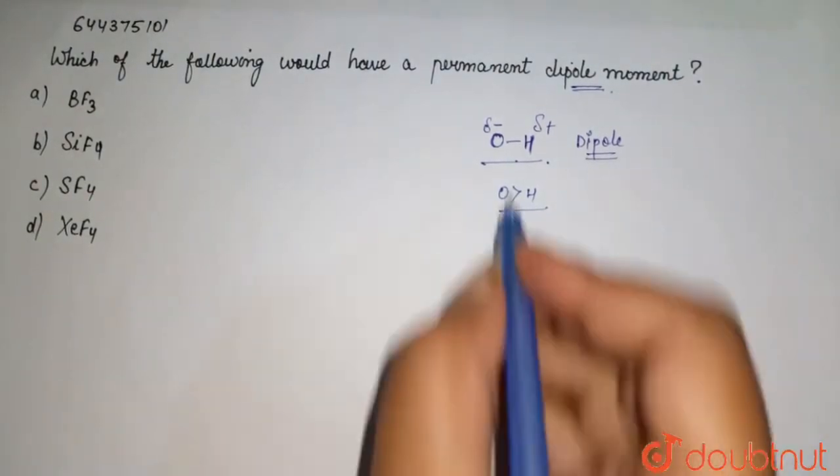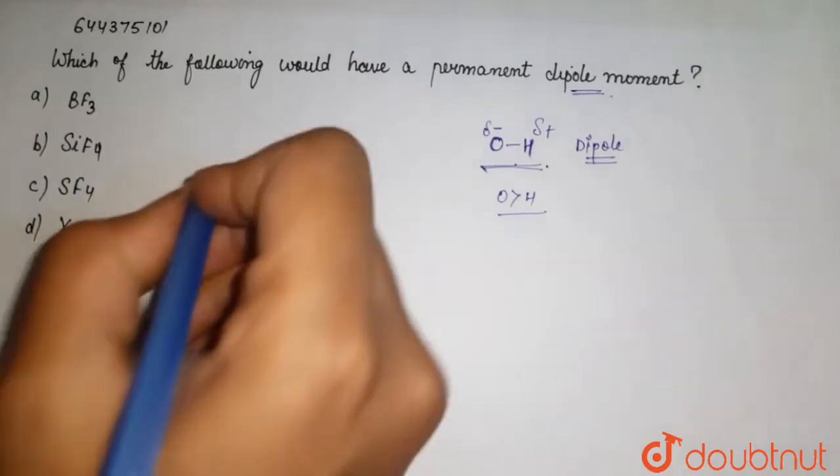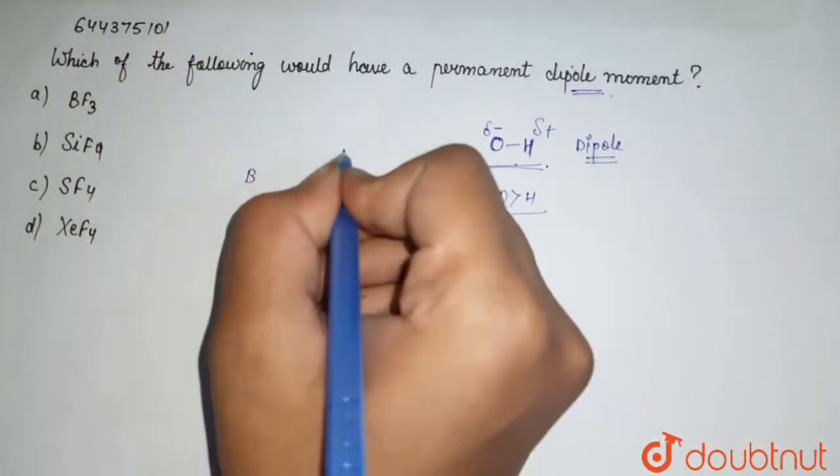So this distribution of electron density is formation of your dipole. The species having this creation or distribution of charge with the difference of electronegativity is considered to be a permanent dipole. Here boron belongs to group 13.